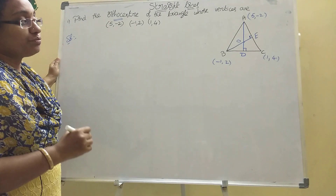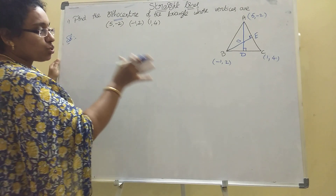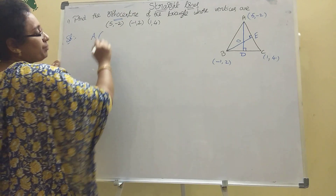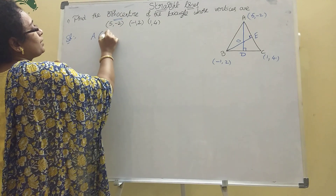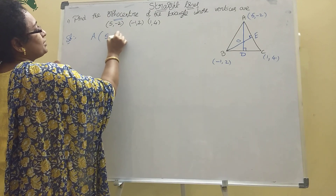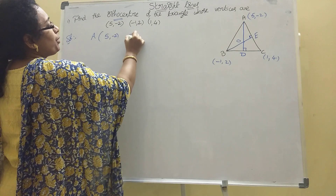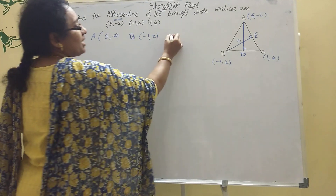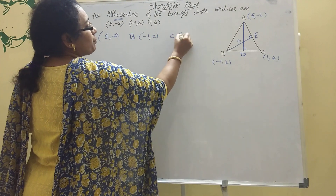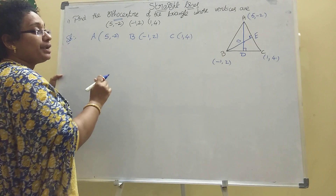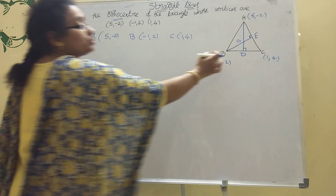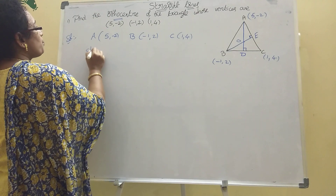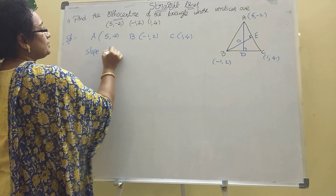First, find the slope of BC. The given points are: A is (5, -2), B is (-1, 2), and C is (1, 4). Now find the slope of BC.